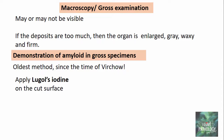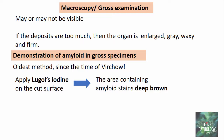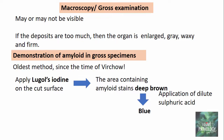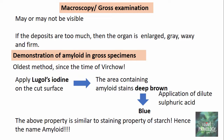To demonstrate amyloid in gross specimens, you apply Lugol's iodine on the cut surface of the specimen. The area containing amyloid stains deep brown. This deep brown color then changes to blue on application of dilute sulfuric acid — a characteristic feature of starch. That is the reason why this condition is referred to as amyloidosis, derived from the word 'amyloid,' meaning starch-like.